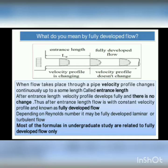After the entrance length, the flow has a constant velocity profile, and this flow is called fully developed flow. To summarize: fully developed flow is a flow with a constant velocity profile which occurs after the entrance length. Depending upon the Reynolds number, the fully developed flow may be laminar or turbulent.